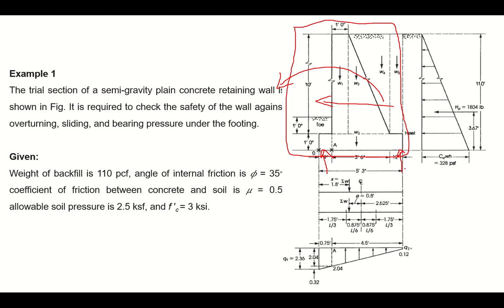The given data: weight of backfill is 110 pounds per cubic feet, the angle of internal friction is 35 degrees, coefficient of friction between concrete and soil is 0.5, and allowable pressure is 2.5 kip per square feet. The concrete compressive strength is 3 ksi.